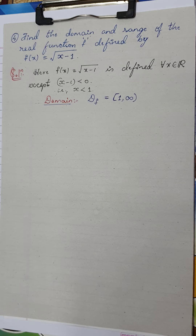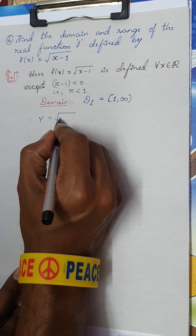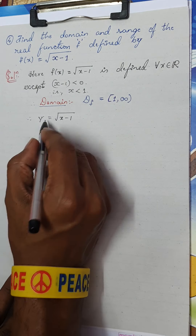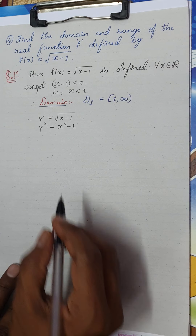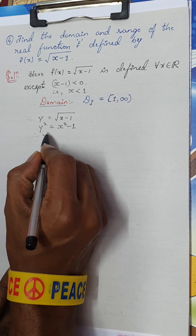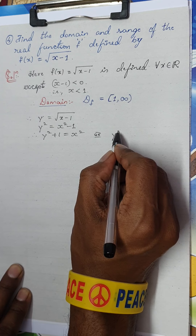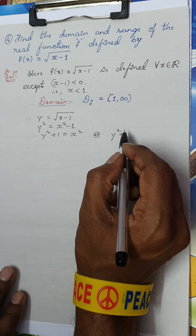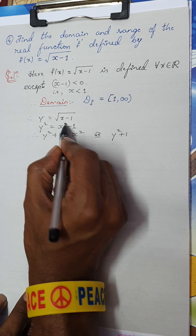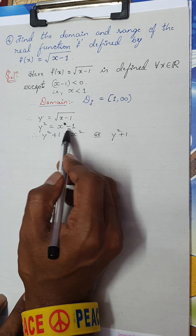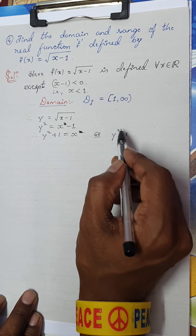To find the range, let y = f(x) = √(x − 1). Squaring both sides: y² = x − 1, so x = y² + 1. Note: there was a small correction here — it is x, not x².